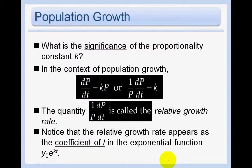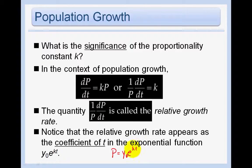For population growth, what is the significance of the proportionality constant k? We know that dP/dt equals kP. Solving for k gives us k equals (1/P)(dP/dt), which is called the relative growth rate. Notice that the relative growth rate appears as the coefficient of t in the exponential function P equals y₀e^(kt). So k, the relative growth rate, is always going to be the coefficient of t.